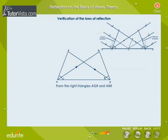From the right triangles AGR and ABR, Sine I by Sine R is equal to BR by AR by AG by AR. That is equal to BR by AG. That is equal to BR by BR. That is equal to 1, because BR is equal to AG.